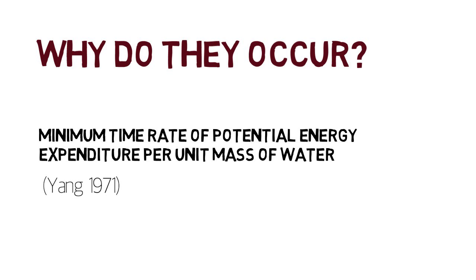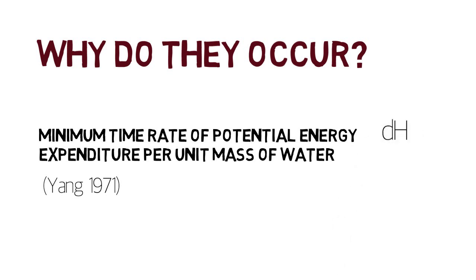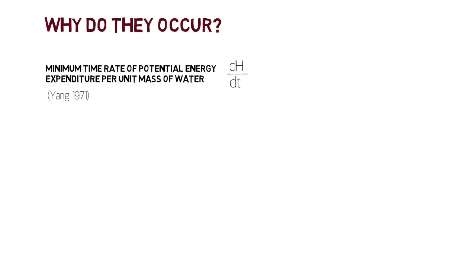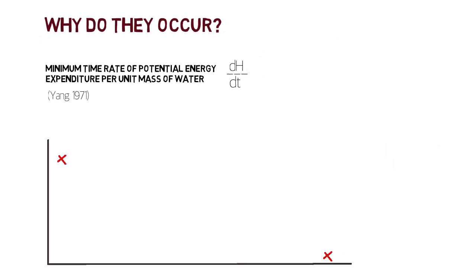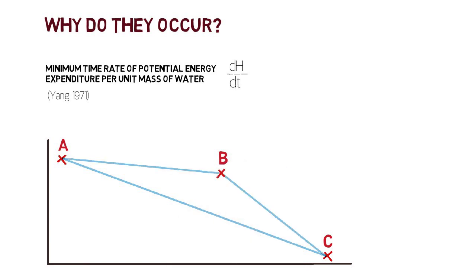So streams want to minimize their energy use, shown as DH, and maximize the time it takes to move it, shown as DT. It has been mathematically proven that a mass of water moving from a point A to a point C has a higher rate along a straight slope than when it detours through a higher point B. When moving through B, the water takes longer to travel to C, lowering the rate — and that's exactly what riffles do.